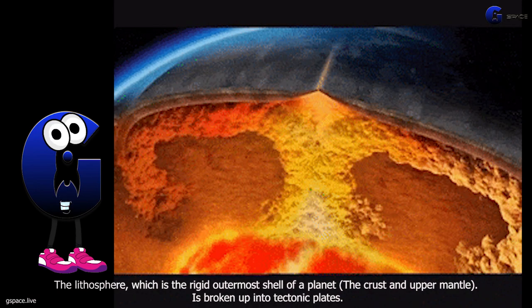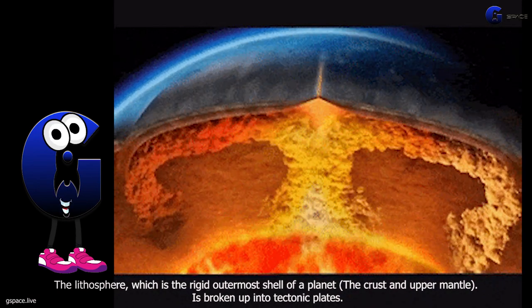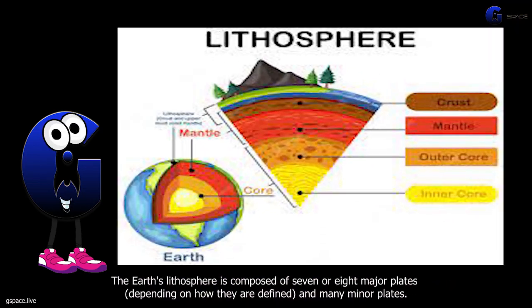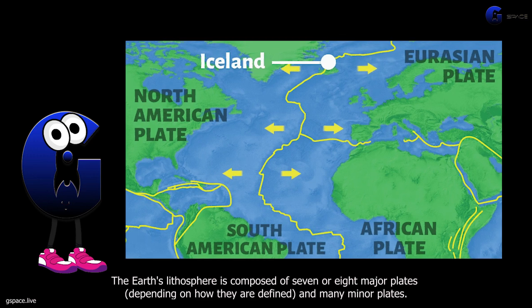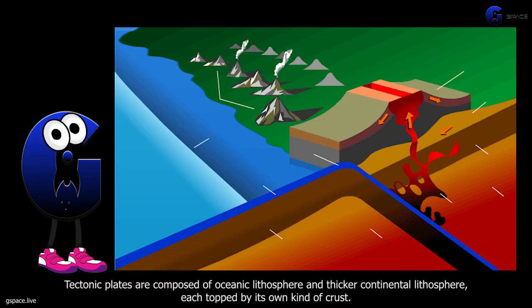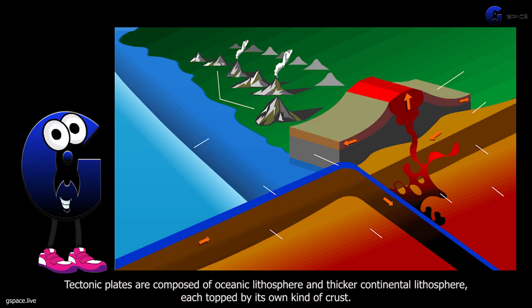The lithosphere, which is the rigid outermost shell of a planet — the crust and upper mantle — is broken up into tectonic plates. The earth's lithosphere is composed of seven or eight major plates, depending on how they are defined, and many minor plates. Tectonic plates are composed of oceanic lithosphere and thicker continental lithosphere, each topped by its own kind of crust.